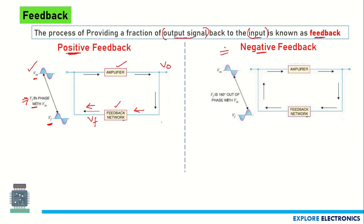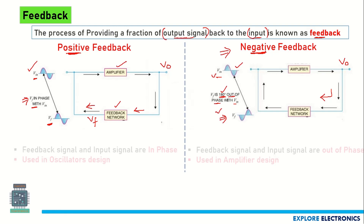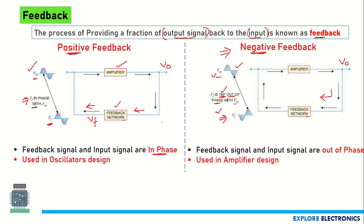Now in negative feedback, we again give V_IN and get the amplifier output, which is fed as part of the input to the feedback network. Here, V_F is out of phase — 180 degrees phase shifted — with respect to the input signal. So if the feedback signal is 180 degrees out of phase with V_IN, we call it negative feedback. Positive feedback is used in oscillator design, while negative feedback is used in amplifier design.